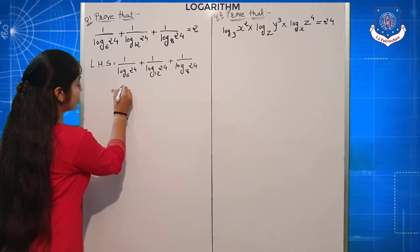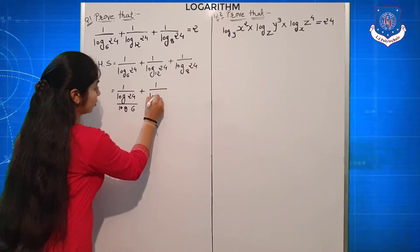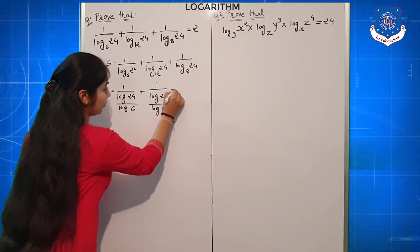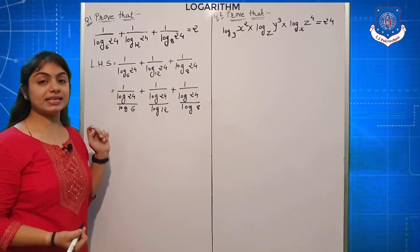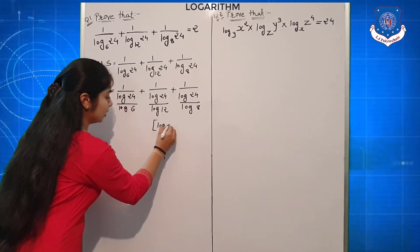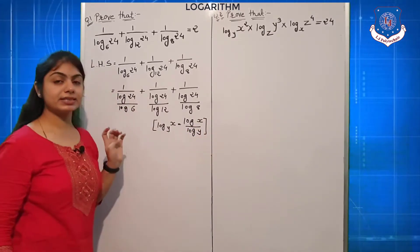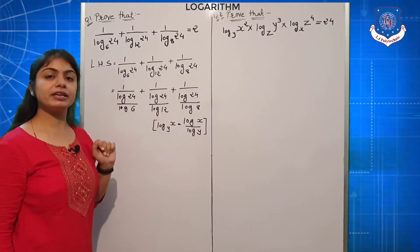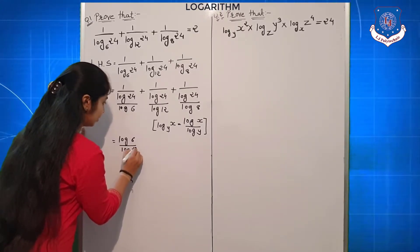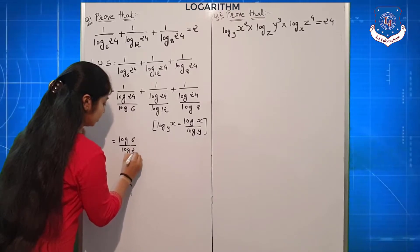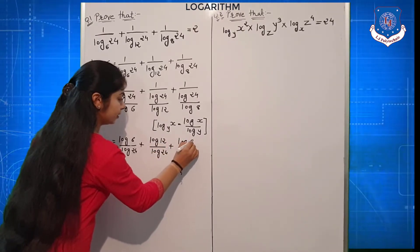Applying change of base, LHS becomes: 1 upon (log 24 upon log 6), plus 1 upon (log 24 upon log 12), plus 1 upon (log 24 upon log 8). When the denominator's denominator converts to the numerator, this becomes: log 6 upon log 24, plus log 12 upon log 24, plus log 8 upon log 24.